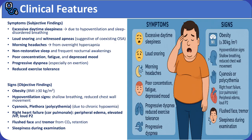On examination, findings include obesity with shallow breathing, cyanosis or plethora due to chronic hypoxemia, signs of right heart failure such as peripheral edema and elevated jugular venous pressure, a flushed face and tremor from carbon dioxide retention, and marked sleepiness during evaluation.